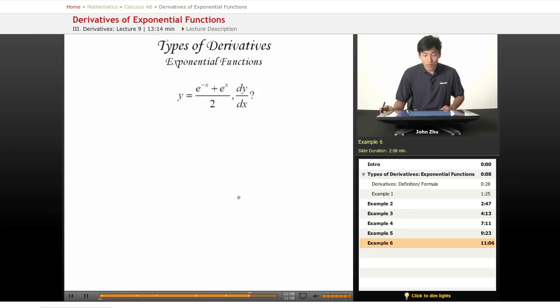Let's look at one more example. This time it's e to the negative x plus e to the x. Right away we can maybe apply the quotient rule because there is a division going on,